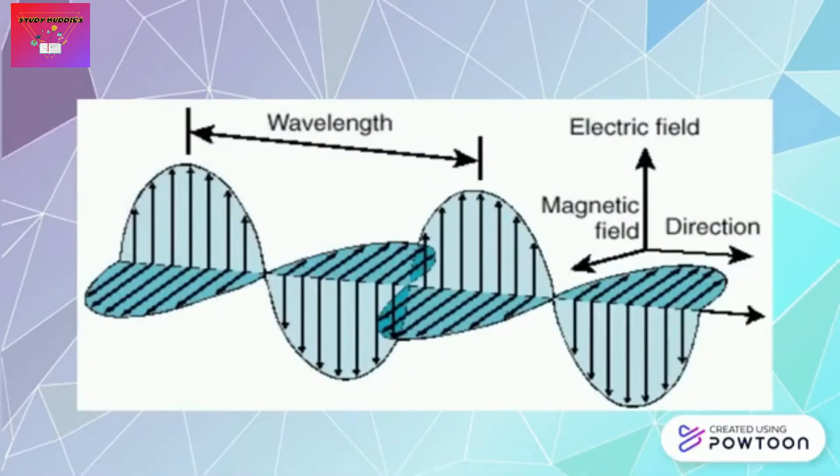Electromagnetic radiation has both electric and magnetic components which oscillate in phase perpendicular to each other and perpendicular to the direction of energy and wave propagation. All types of electromagnetic radiation can be described in the terminology of waves.